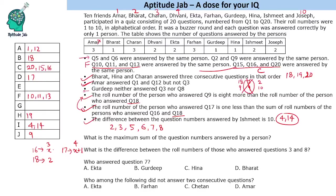Re-reading the constraints: questions 5 and 6 were answered by the same person; questions 2 and 9 were answered by the same person. Since question 9 was already answered by roll number 10 (Joseph), question 2 was also answered by Joseph. For questions 5 and 6, checking each person: Amar has one slot left so can't take two; Bharat, Charan, Farhan, Hina, Ishmith, Joseph are all filled. Gurdeep answered only one question. The only eligible person is Ekta, who answered questions 5 and 6.